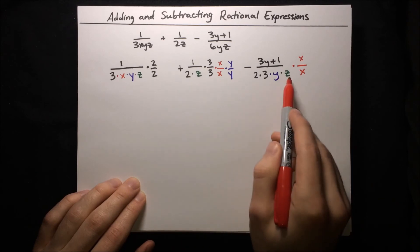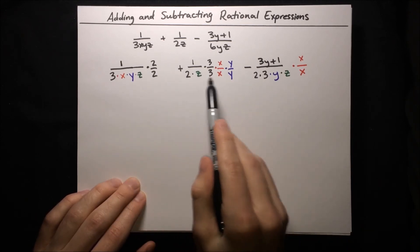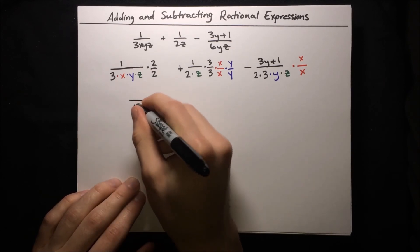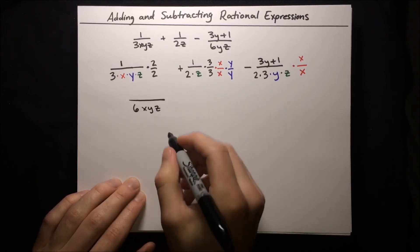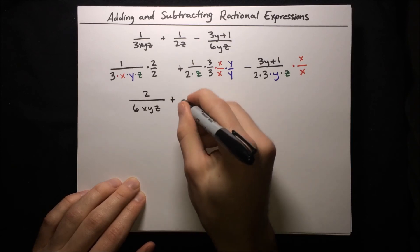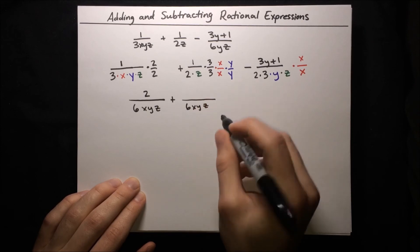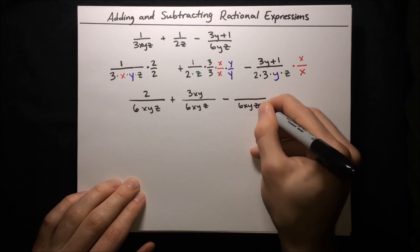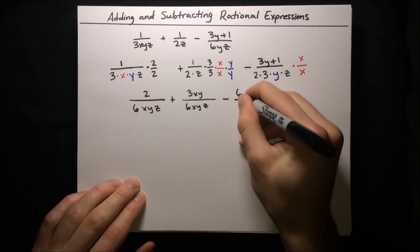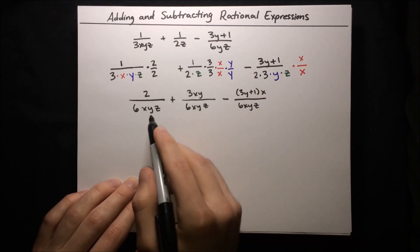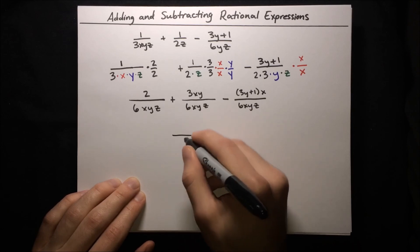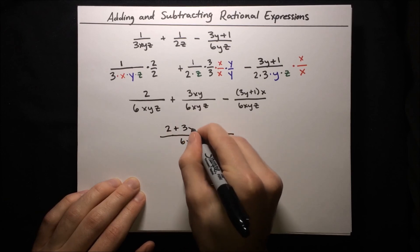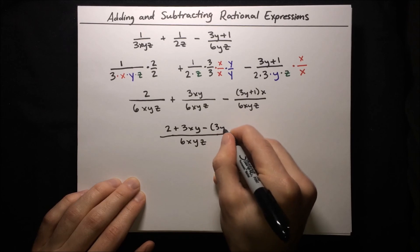Now we've got our common denominators. The common denominator is 6xyz. Multiplying out the numerators: the first gives 1 times 2 = 2; the second gives 3xy; and the third is minus (3y+1) times x. So the expression becomes (2 plus 3xy minus (3y+1)x) over 6xyz.